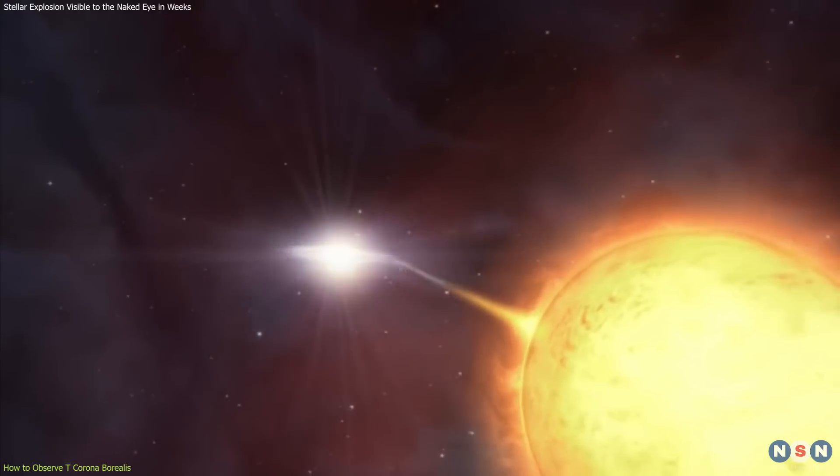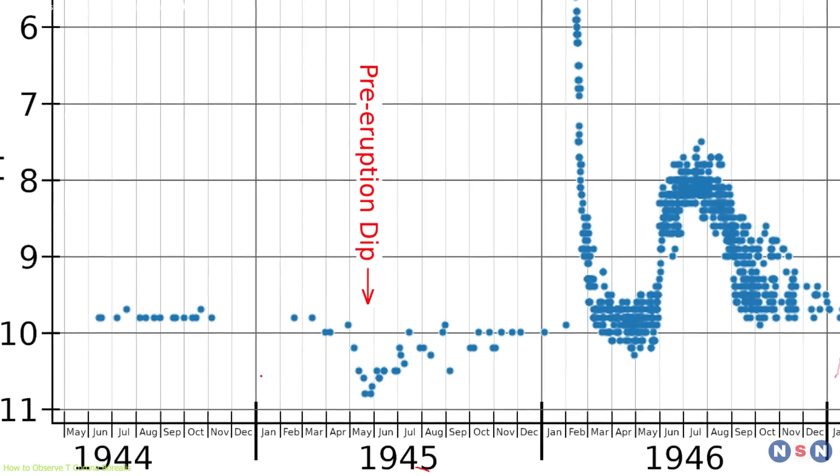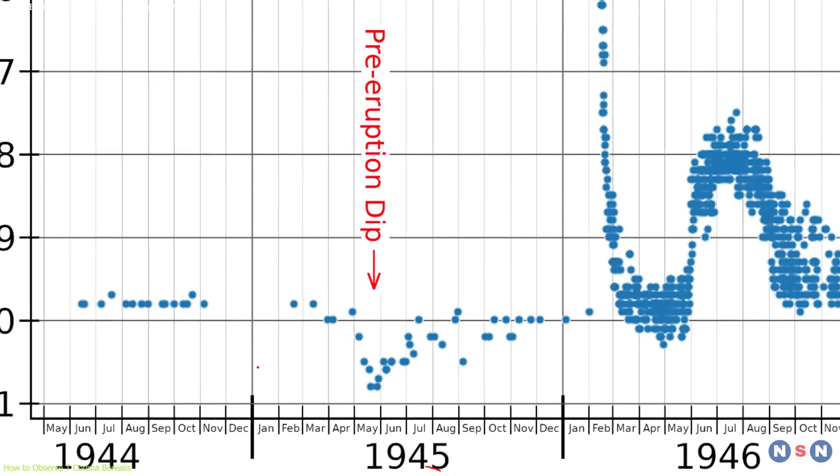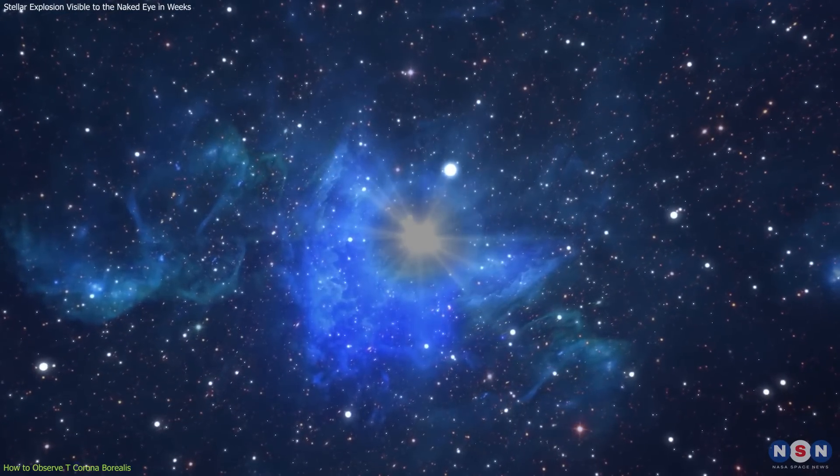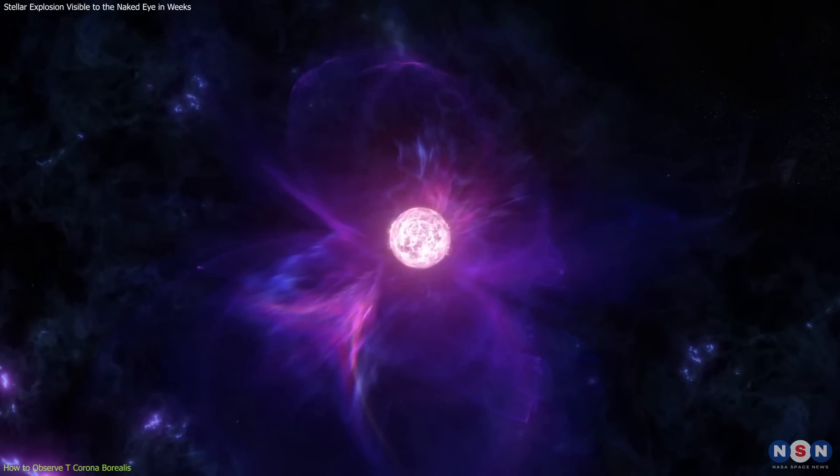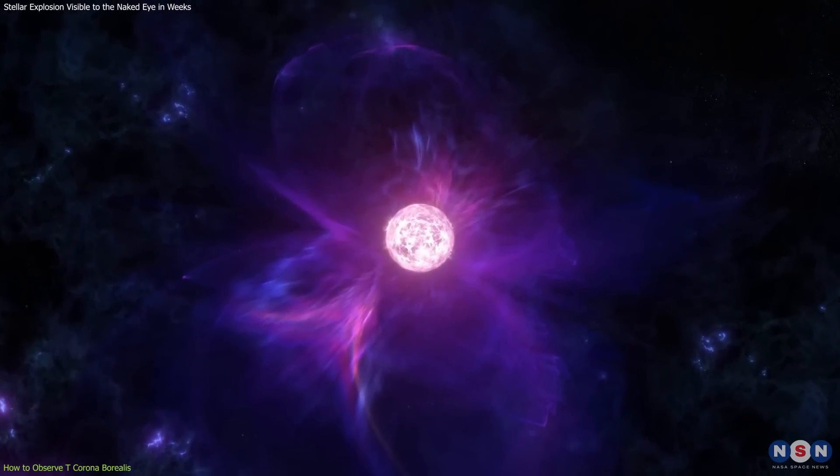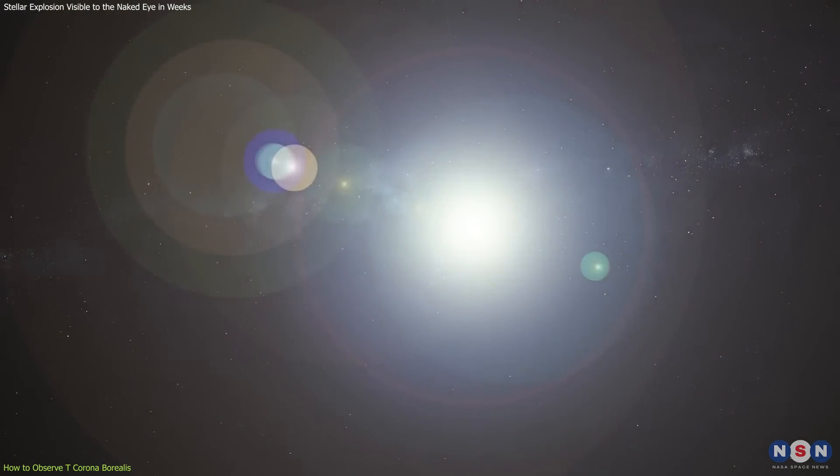Timing is crucial, as the exact moment of the outburst is unpredictable. Historical observations indicate that TCRB's brightness drops just before an outburst. This drop has been observed recently, suggesting that the nova event is imminent. However, the exact timing remains uncertain, requiring regular observation. Keeping a close watch on this star over the next few weeks will increase your chances of catching the outburst.